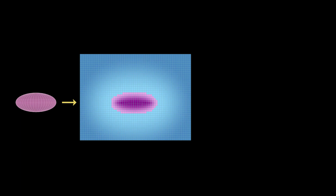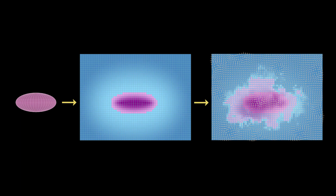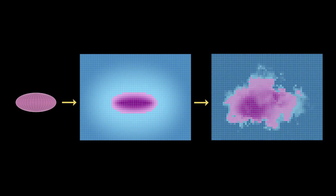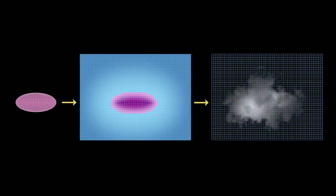The basic steps are like this. We start with the mesh geometry, convert it into a volume, and generate a voxel field from this volume. Then we advect this voxel field using a vector field and convert the advected field back to a volume to form the clouds.